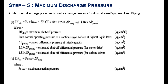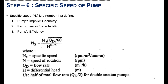In the sixth step, you will calculate the specific speed, which defines the pump impeller geometry, performance characteristics, and pump efficiency. Here is the formula to calculate specific speed, where N is the speed of rotation, Qd is the flow rate at design conditions, and H is the differential head. In cases where there is a double suction pump, we will use half of the total flow rate.